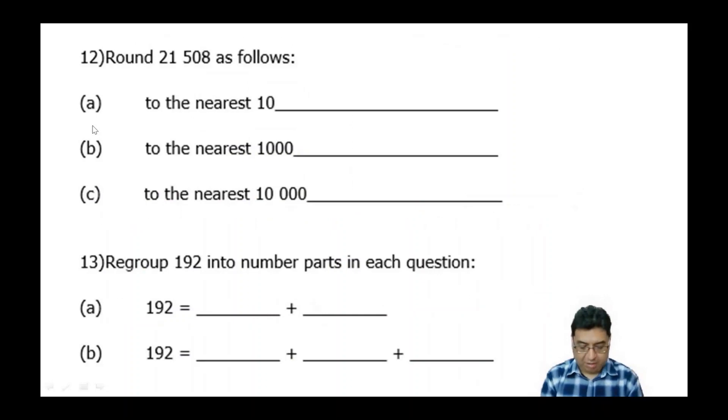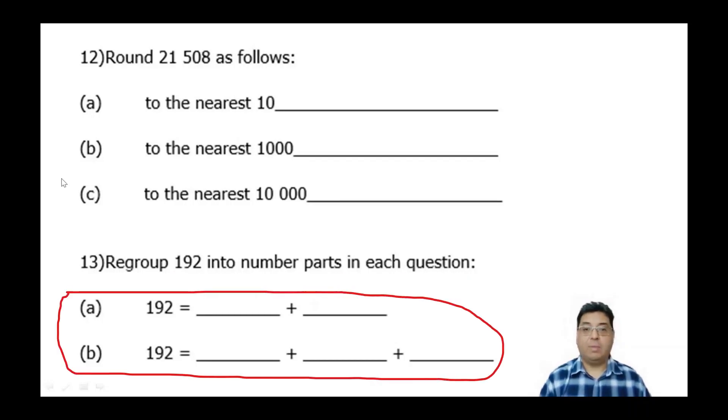Number 12 is asking you to just round 21,508 as follows. So here for letter A, I've got to the nearest 10, B to the nearest thousand and C to the nearest 10,000. Again, make sure you're reading this carefully. Number 13 is just asking you to regroup 192 into the number parts in each question. So again, please read and follow the directions.